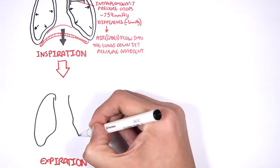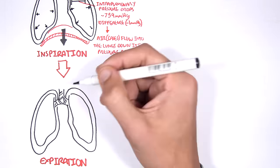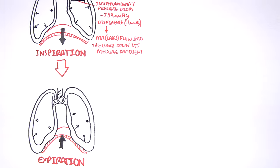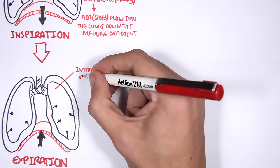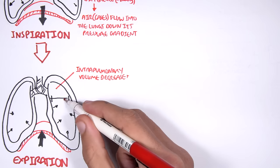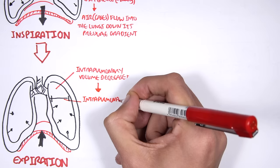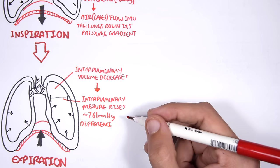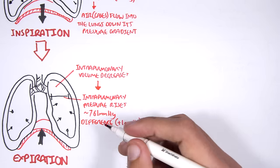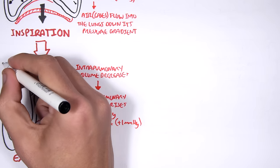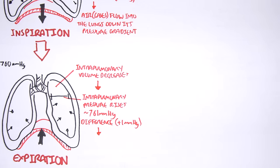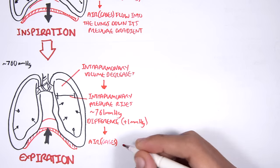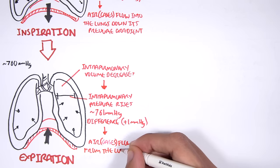In expiration, the intercostal muscles and the diaphragm relax. The diaphragm moves back up to its original position, causing the intrapulmonary volume to decrease. A decrease in intrapulmonary volume means the intrapulmonary pressure increases — to 761 mmHg, one above atmospheric pressure. Knowing the rule of gases, gas will move out from the lungs into the outside air, down its pressure gradient.